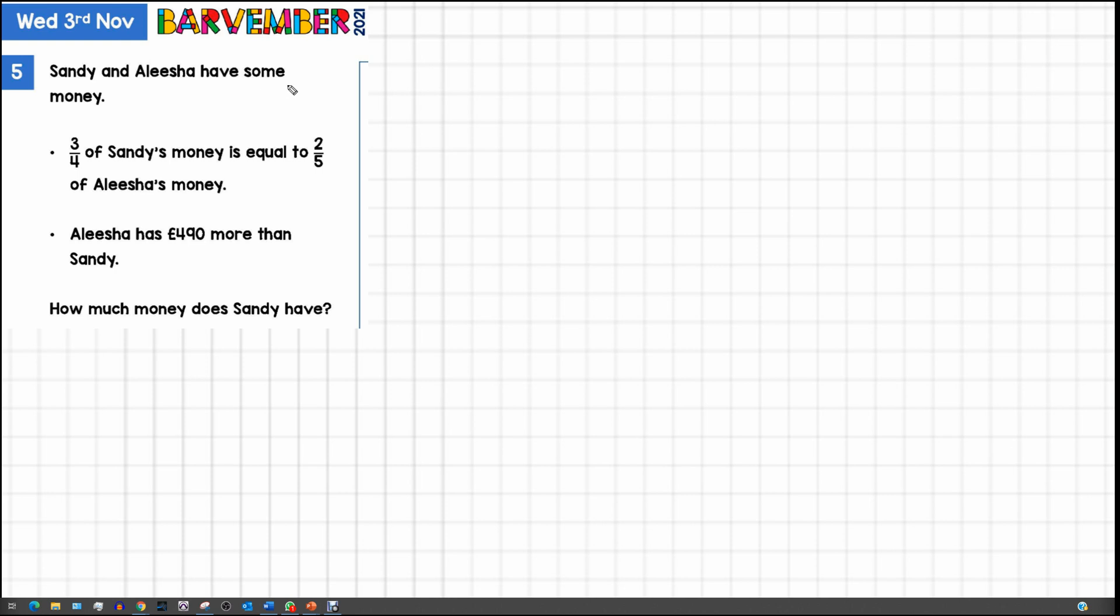Sandy and Alicia have some money. Three quarters of Sandy's money is equal to two fifths of Alicia's money. We already like this because we've got some fractions here and some comparing. Alicia has £490 more than Sandy. The question we're asked is how much money does Sandy have?